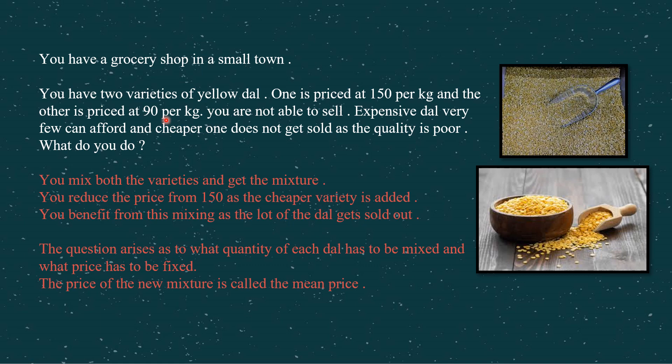What do you do now? There is a simple option: you mix both varieties of dal — the cheaper one and the expensive one — and you get a mixture. You are willing to sell this mixture at a price a little lesser than 150, because you have mixed the 90 rupees per kg dal with the expensive dal. So you reduce the price from 150 and you are able to sell both lots. You get the benefit of mixing both quantities of dal.